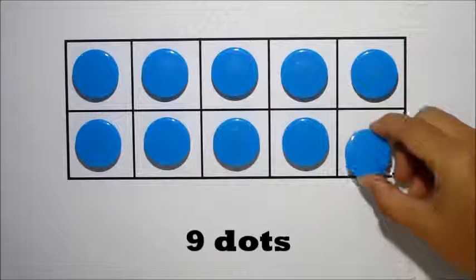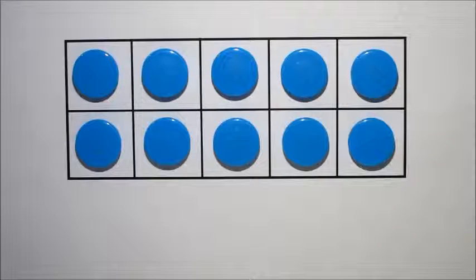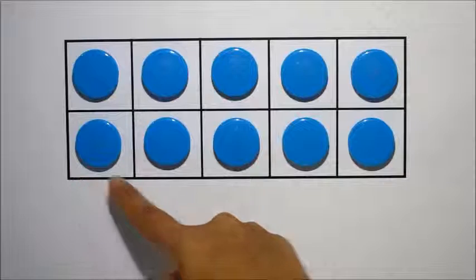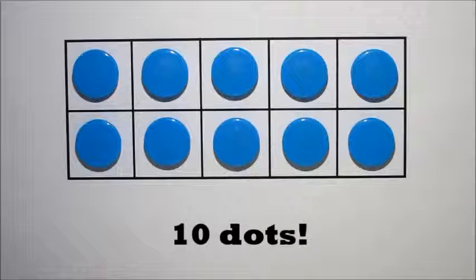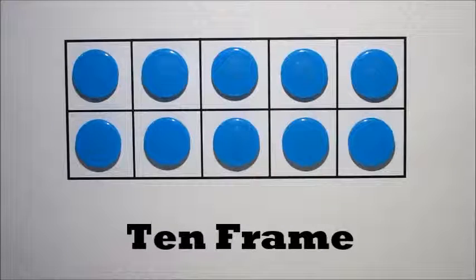1 more dot makes 10. When both rows are fully filled, there are 10 dots. That's why we call this a 10-frame.